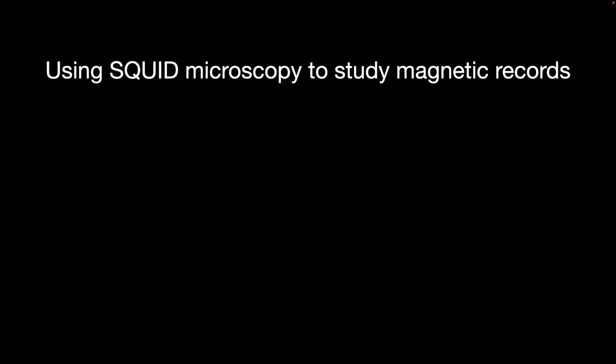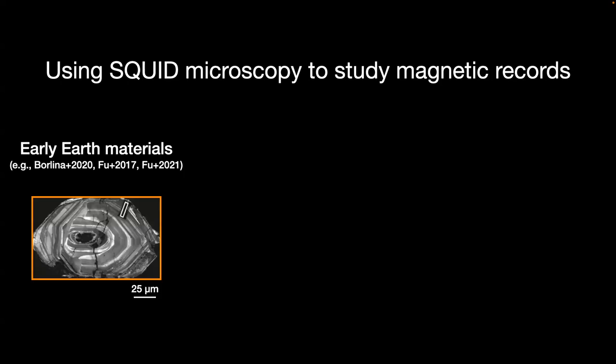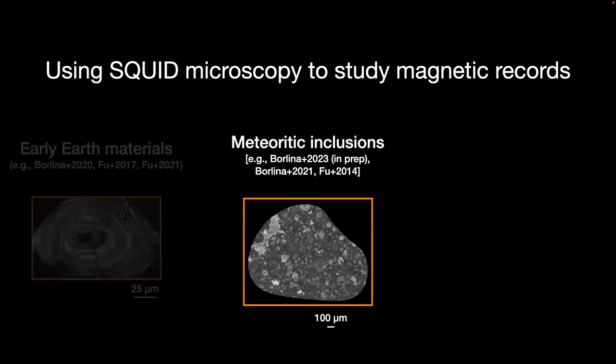We've used SQUID microscopy to study magnetic records in other samples — you might have heard of work trying to establish the early evolution of Earth's magnetic field, where we looked at the Jack Hills zircon grains, and there's been previous work on the Bishop Tuff. There's also been work on meteoritic inclusions; I've done some work on chondrites, as has Roger, and we're currently looking at CAIs as magnetic targets using SQUID microscopy. The reason we can do those things is that they are too weak to be measured with traditional paleomagnetic techniques.